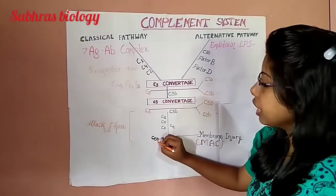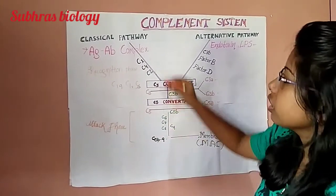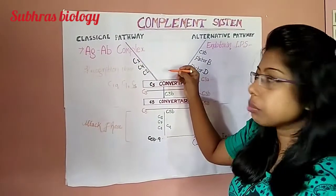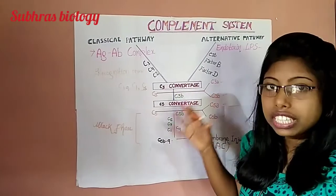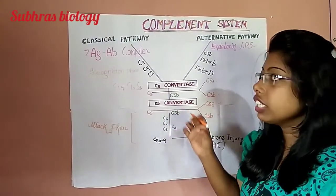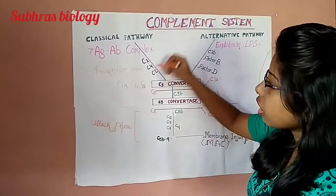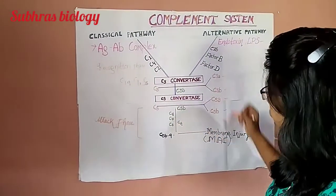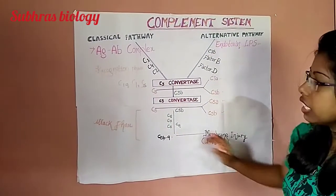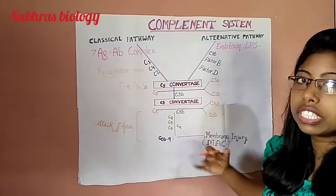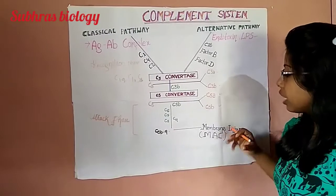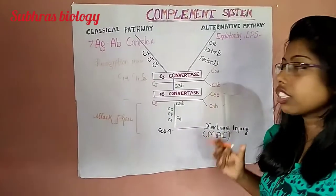From C5B to C9, this is the recognition phase. Recognition phase means when complement attaches with the antibody, it recognizes the antibody. From C5 to formation of membrane injury, this is the attack phase. Complement is totally activated and immune cytolysis can occur.